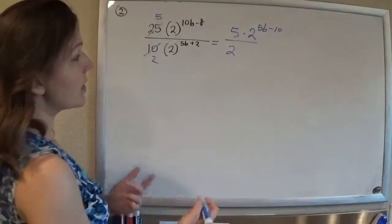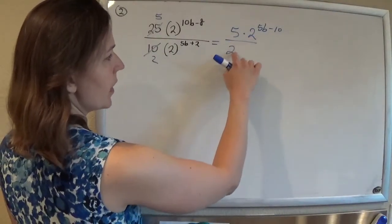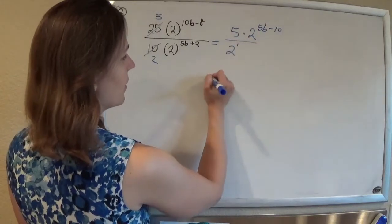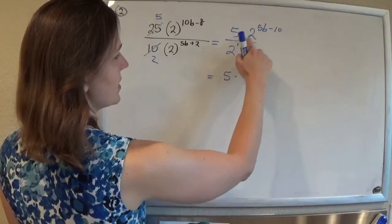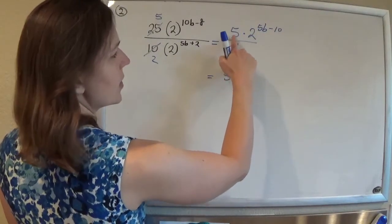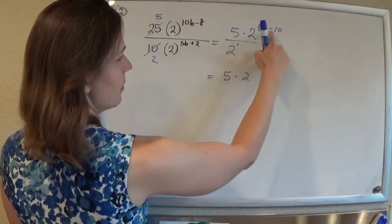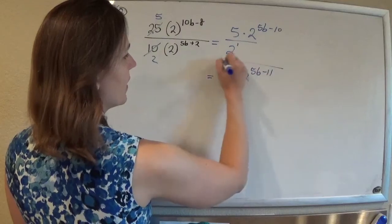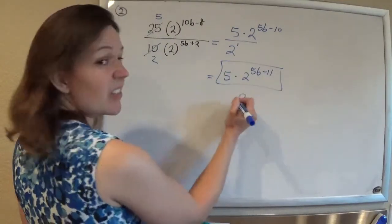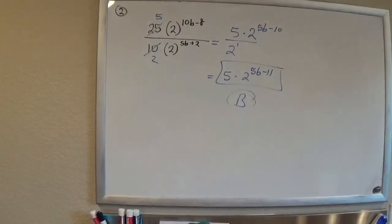And so we're not quite done, because now we notice that I've got the same base here and here. So this is like 2 to the 1 down there. So I can subtract these exponents, since these guys have the same base. So we'll have 5 times 2, and then 5b minus 10 minus 1 will be 5b minus 11. And that is your answer. I believe it is B. So there you go.